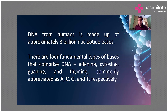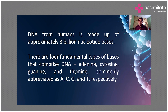DNA from humans is made up of approximately 3 billion nucleotide bases. There are four fundamental types of bases that form the DNA: adenine, cytosine, guanine, and thymine — what we call A, T, G, and C. There is always a system where A always pairs with T, and guanine always pairs with C.